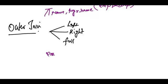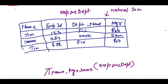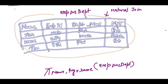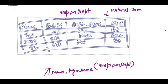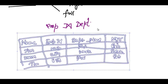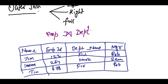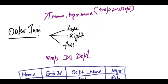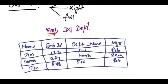When I say employee left outer join — this is the symbol of left, it is open towards the left — employee left outer join department, then what I would get is all the tuples in employee plus all the tuples in the natural join of employee and department.